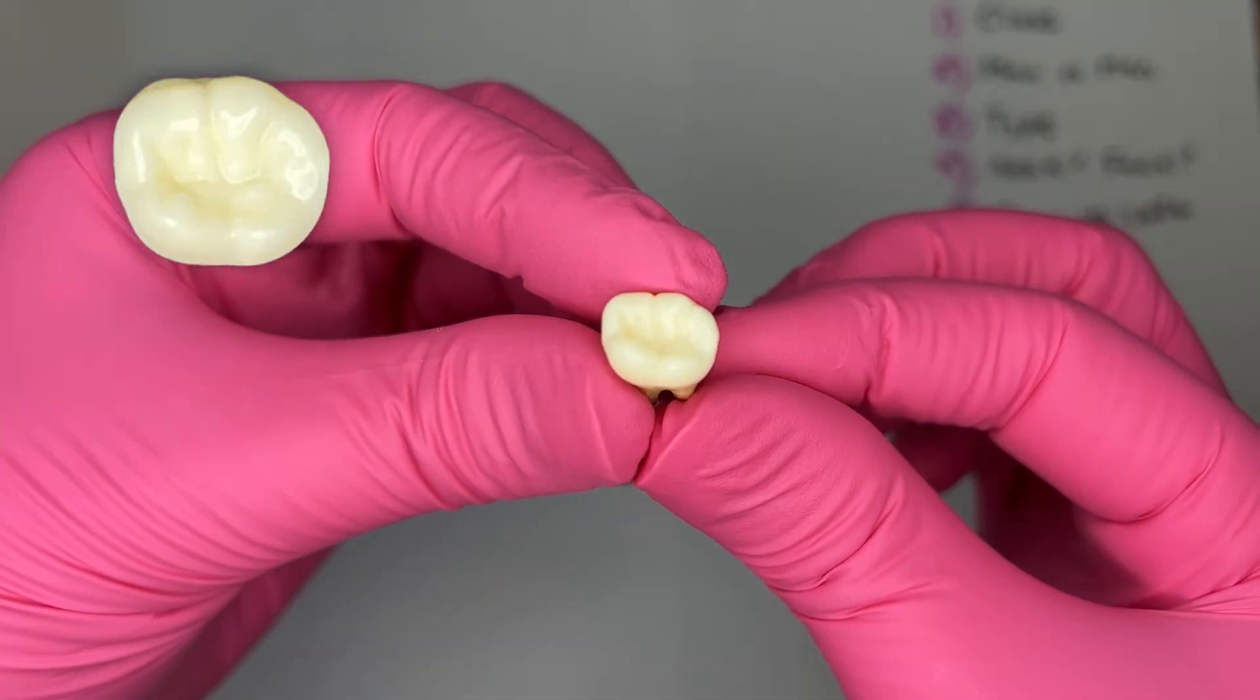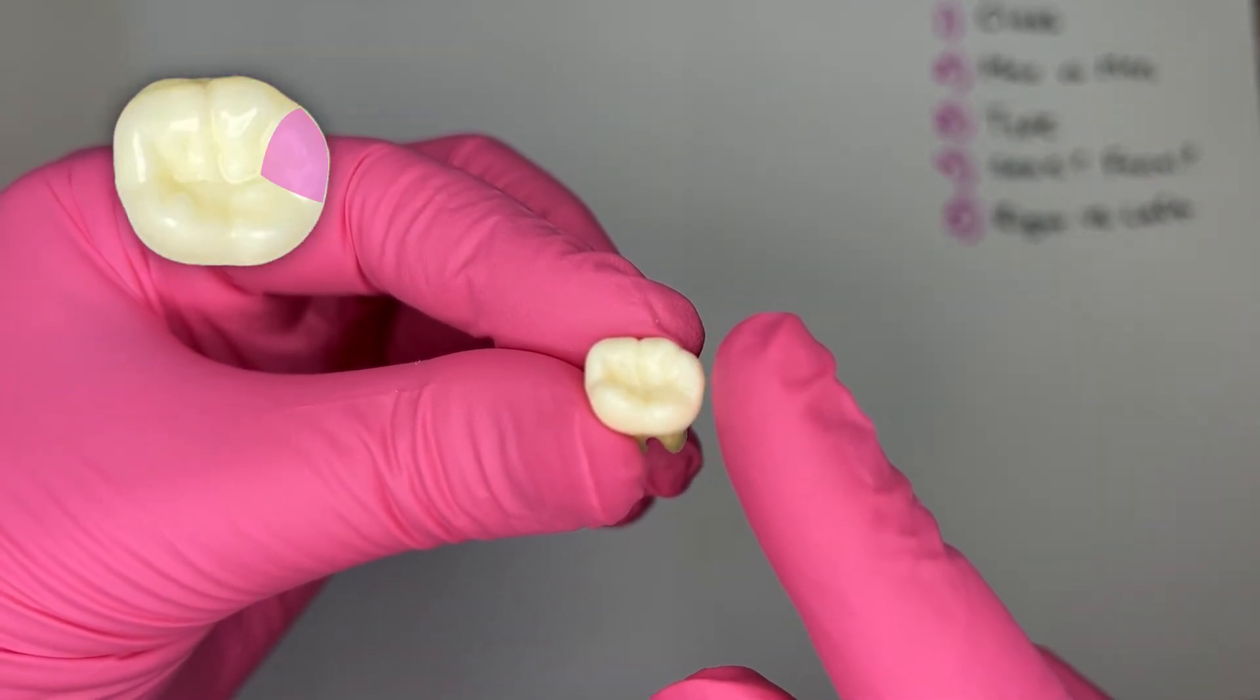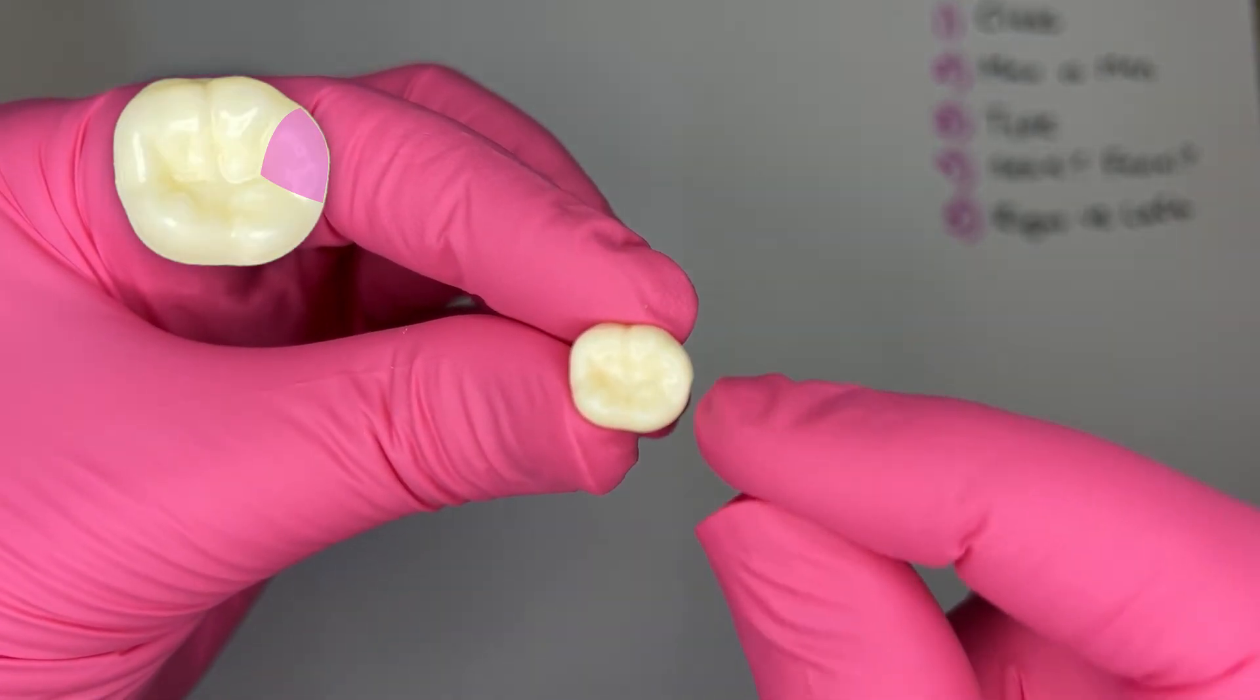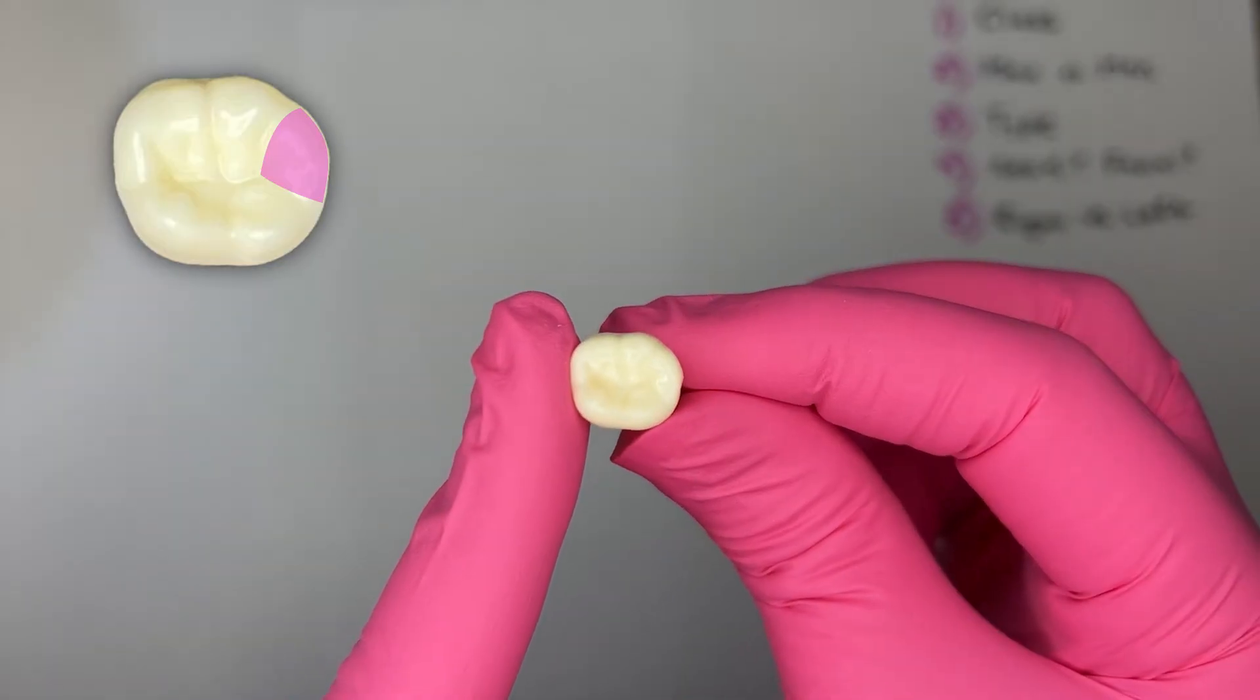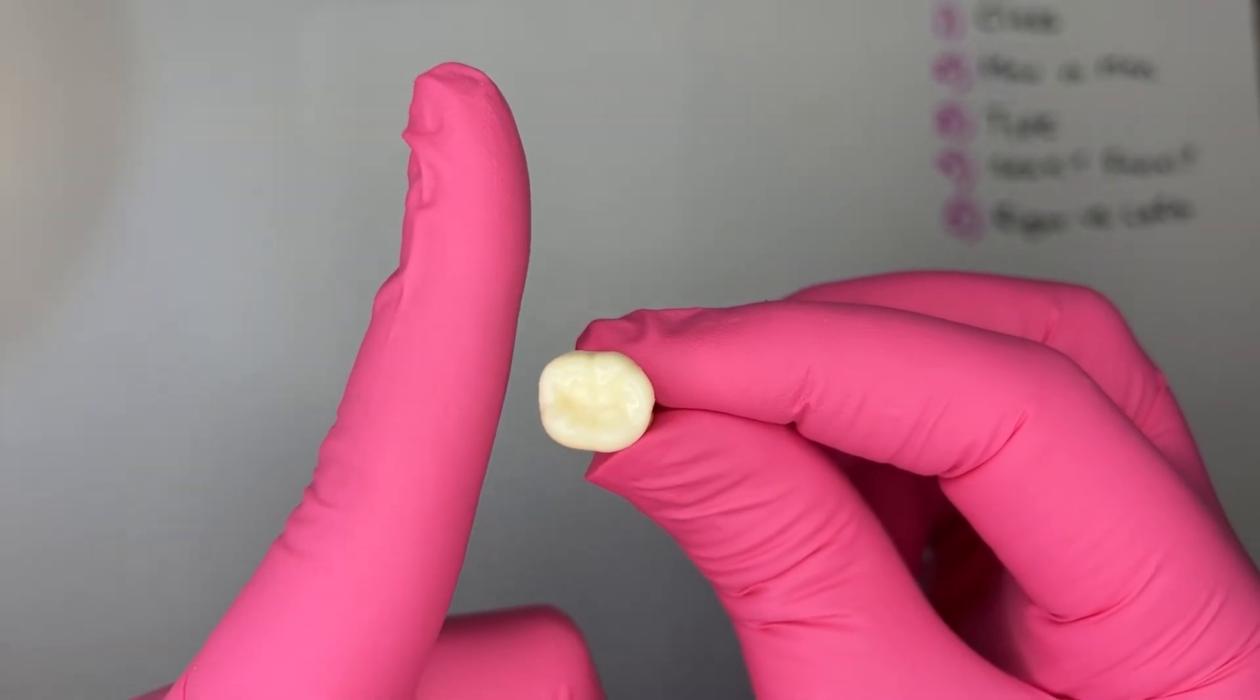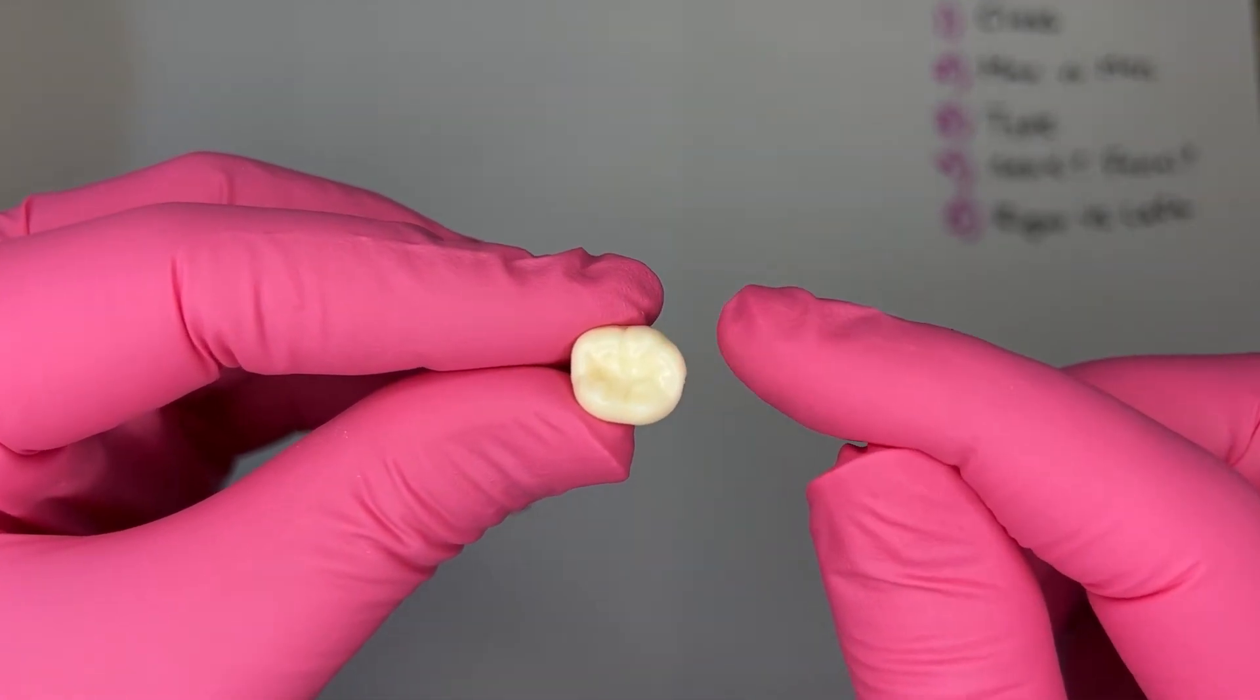Looking at the tooth from the occlusal, I look at the cusps. Finding the smallest cusp, which is the distal cusp, I know that this is the distal and this is the mesial. Another way of figuring it out is the outline of the mesial is straighter than the outline of the distal.